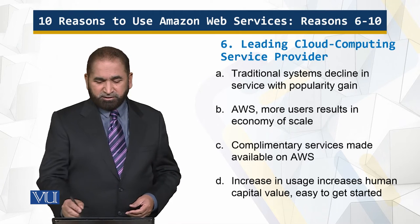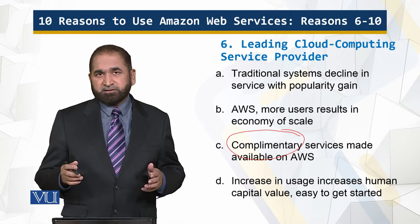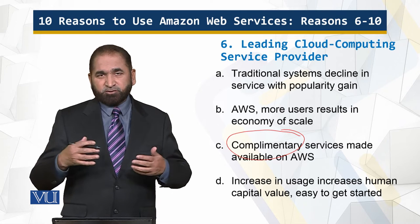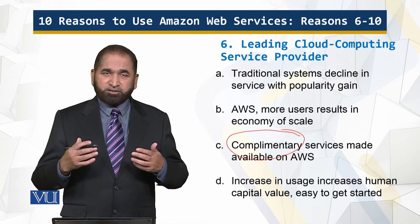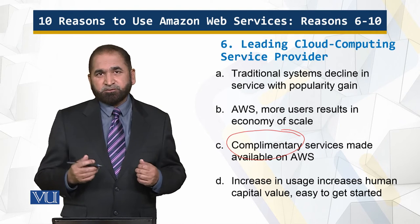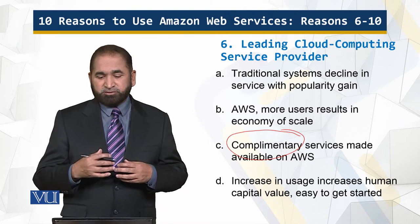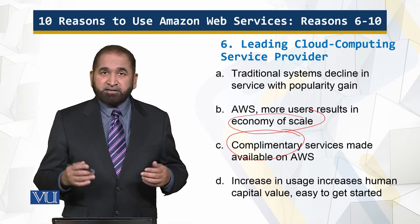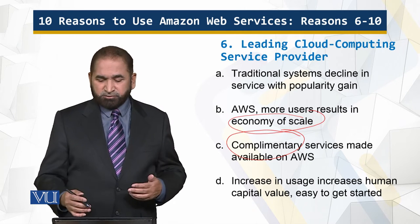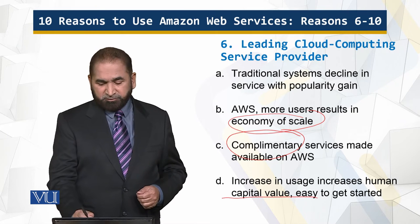Organizations and companies offering complementary services look at the convergence of users at Amazon Web Services and also offer their complementary services on that cloud. That draws more users, and more users result in the economy of scale, and increase in usage and human capital value leads to the network effect.